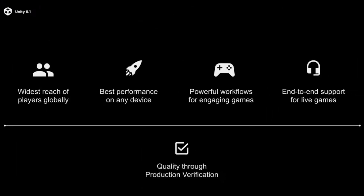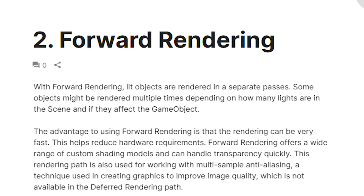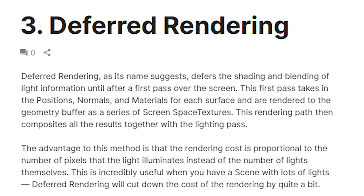Now let's dive into what is actually new with Unity 6.1. According to Unity, they focused on three core priorities this release: stability, performance, and quality. One of the biggest additions is Deferred Plus rendering for the Universal Pipeline. This is significant because Deferred Plus was only available in the HDRP pipeline, and now we get it with URP. In traditional forward rendering, the engine processes each object and applies all lighting calculations at once, which becomes inefficient with many light sources. Deferred rendering instead renders all geometric and material information into Gbuffers and then applies lighting as a separate pass, so each pixel is only processed once for geometry before lighting is calculated.